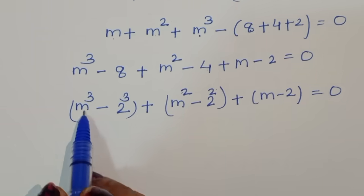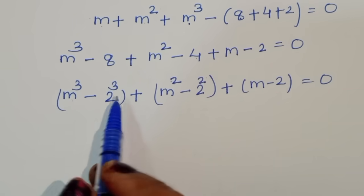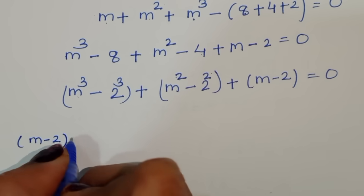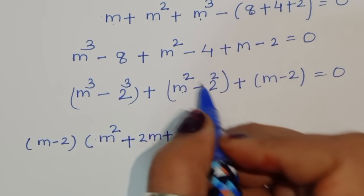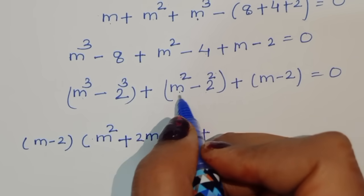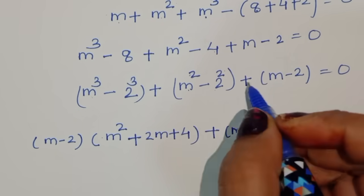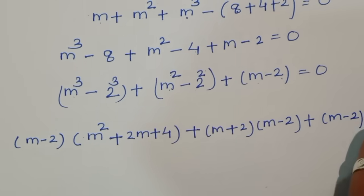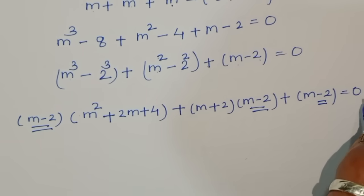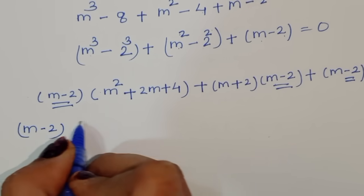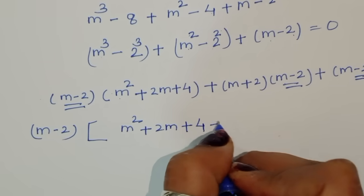Now m³ − 2³ uses the formula x³ − y³ = (x − y)(x² + xy + y²), giving us (m − 2)(m² + 2m + 4). For m² − 2², we use the difference of squares formula a² − b² = (a+b)(a−b), giving (m + 2)(m − 2). Plus the last term (m − 2).